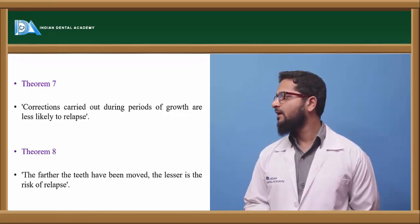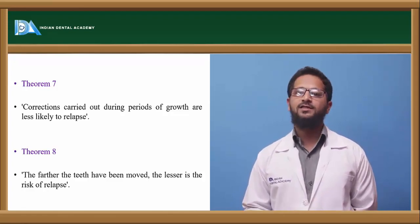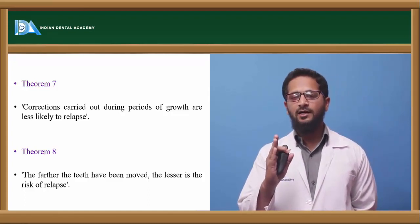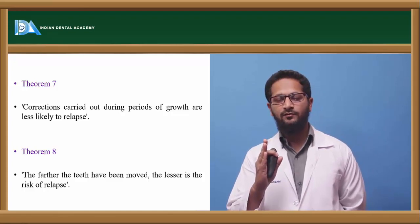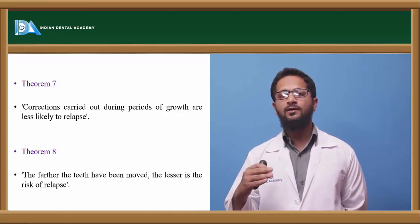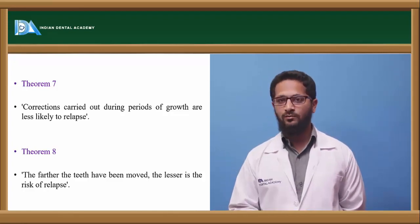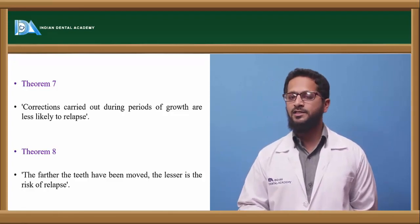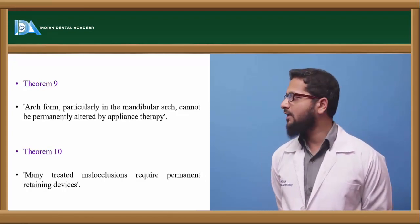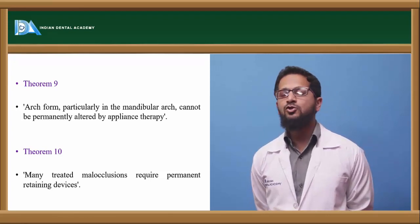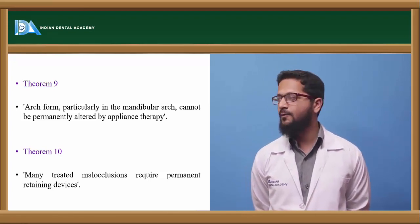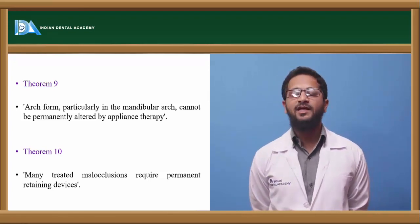The eighth theorem states that the farther the teeth are moved, the lesser are the chances for relapse — a tooth moved a greater distance finds it more difficult to return to its original position. The ninth theorem states that arch form, particularly the mandibular arch, cannot be permanently altered by appliance therapy; if altered to a major extent, there are more chances for relapse. The tenth theorem, added by Moyer, states that certain malocclusions require permanent retaining devices.